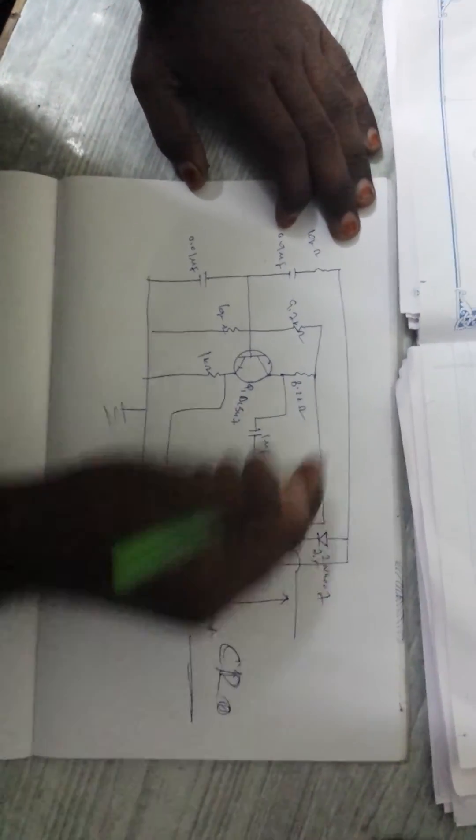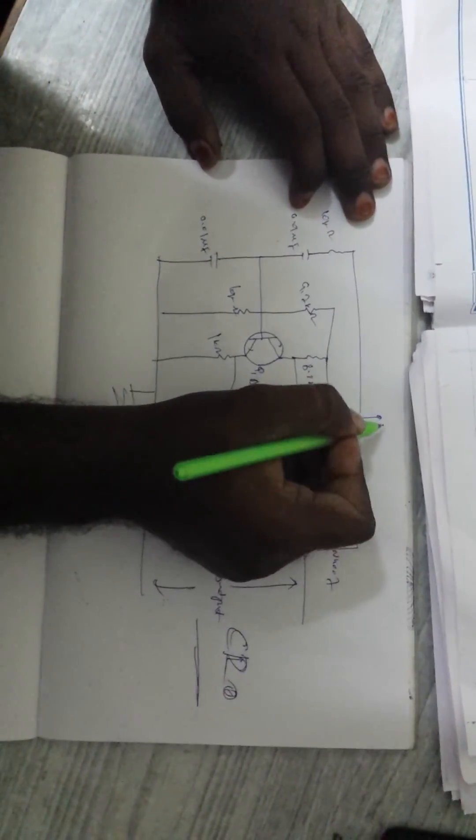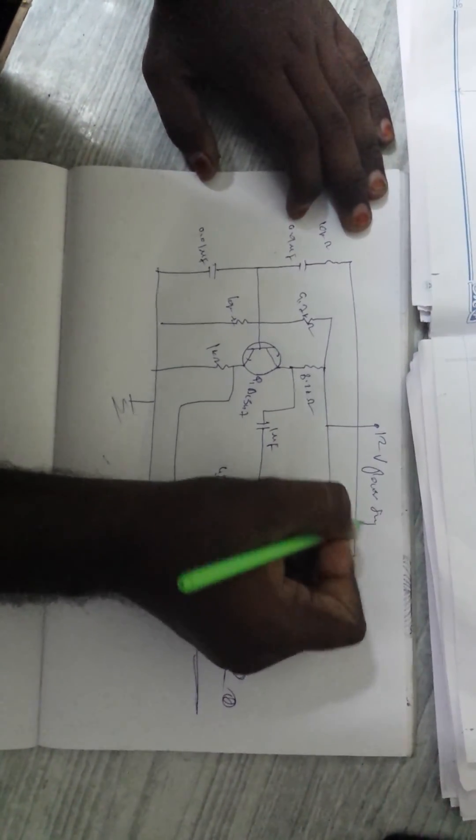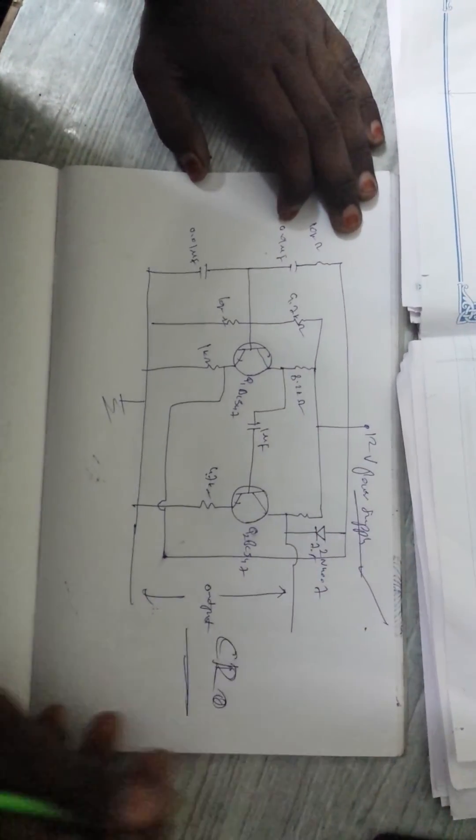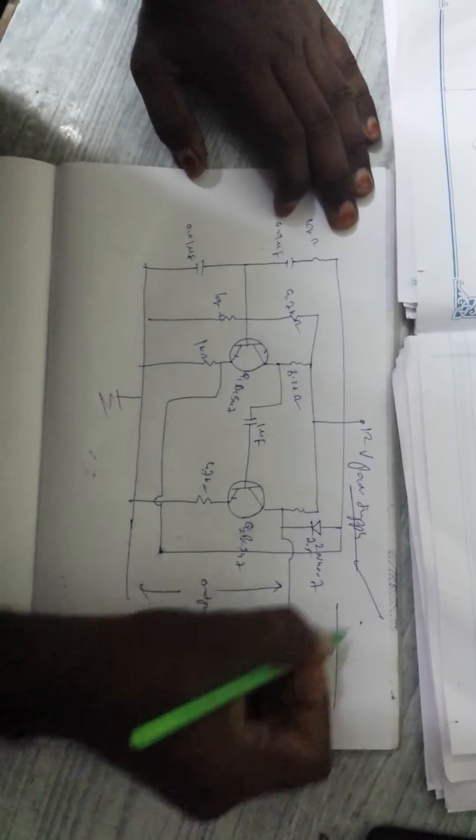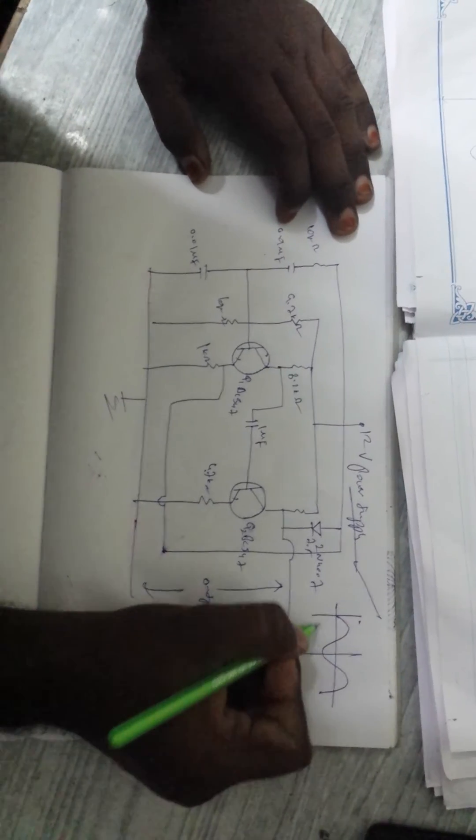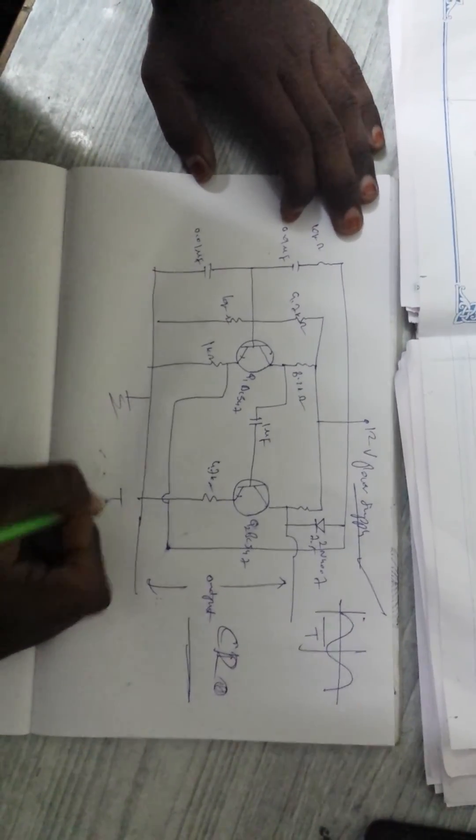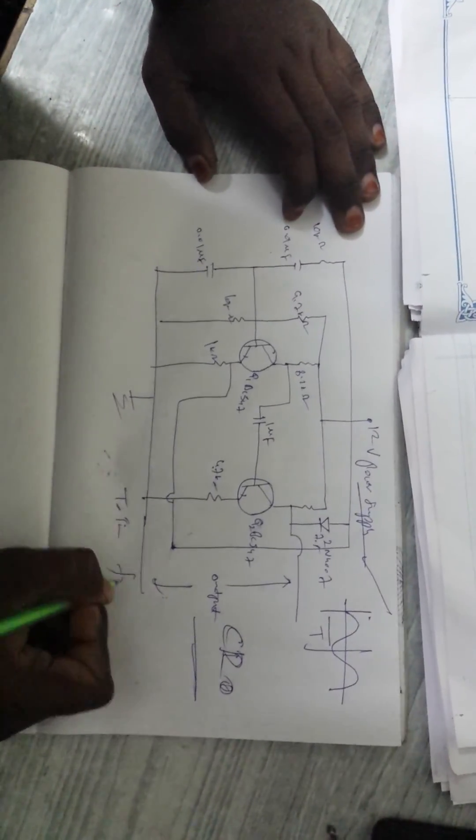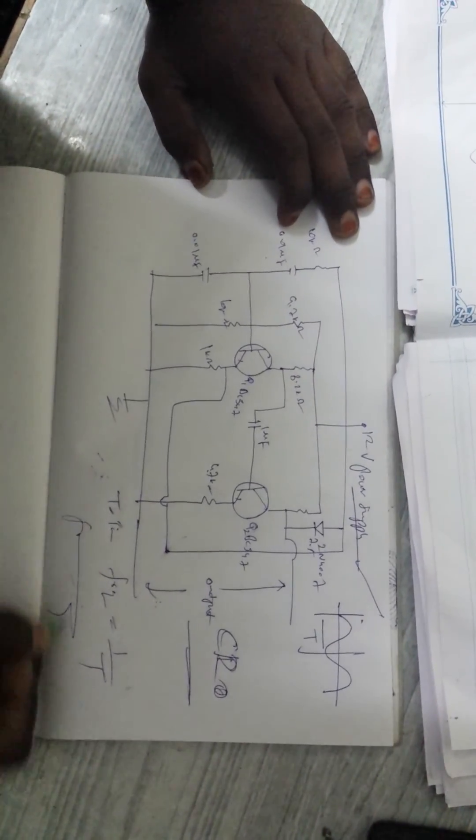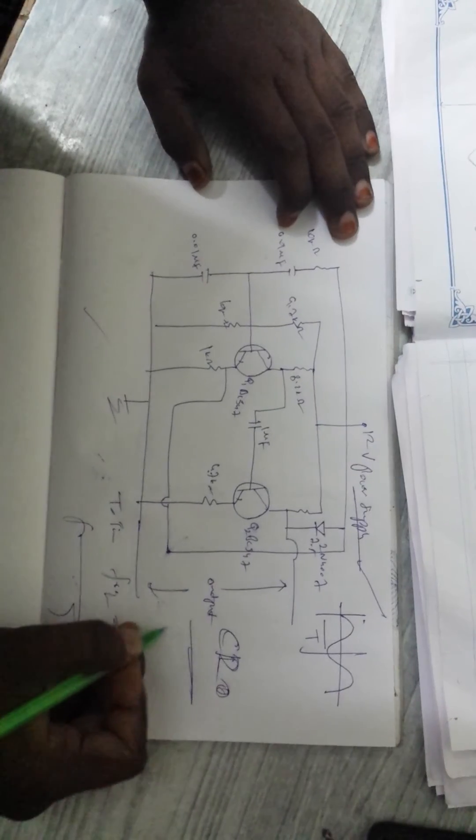This is the circuit diagram, and we connect the input of 12 volts to the power supply. We have done the circuit diagram. Let's measure the output in CRO. It comes in sine waves like this. You have to measure the time period from here to here, and with the time period we can find the frequency. Frequency equals one by time period. This is known as the Wien Bridge Oscillator.